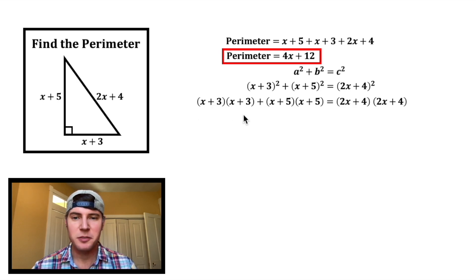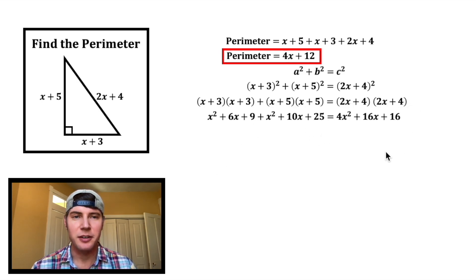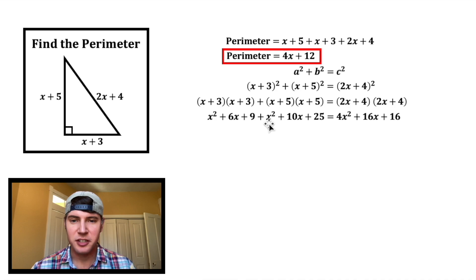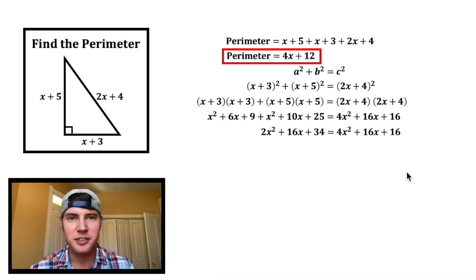So x plus 3 times x plus 3 — we multiply that out and get x squared plus 6x plus 9. We multiply the other two out to get their expanded forms as well. Then x squared plus x squared is 2x squared, 6x plus 10x is 16x, and 9 plus 25 is 34. And we can bring this stuff down.